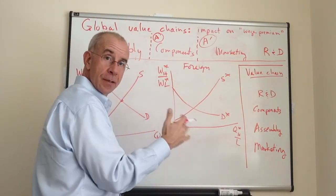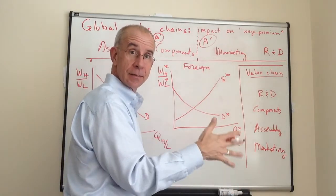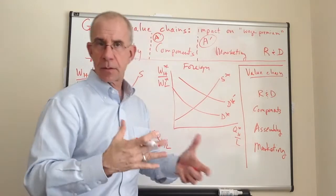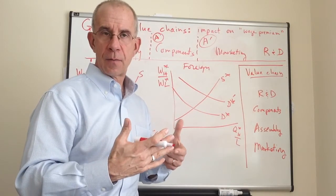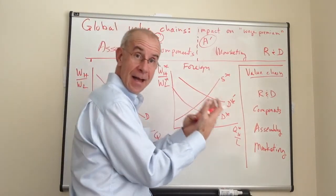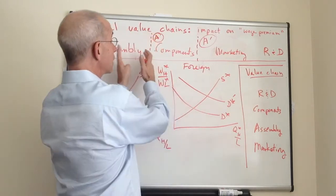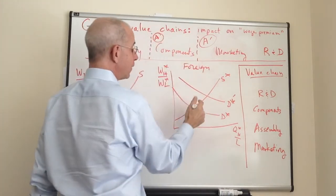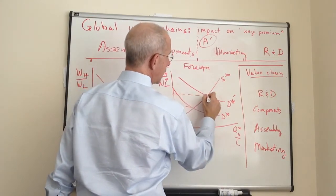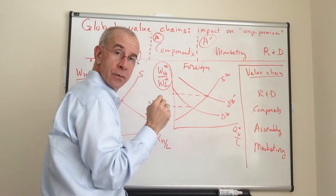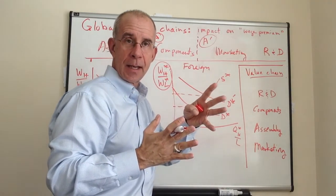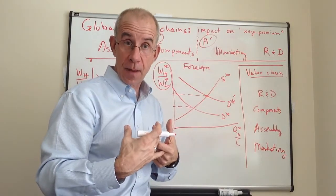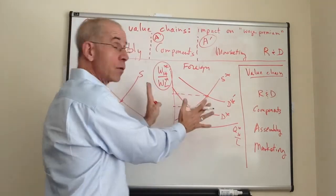Let's start with the foreign country. This change in demand for what is, for them, a relatively high-skilled task is going to increase their relative demand curve. We're talking about relative demand: high-skilled labor demand increases because more components are being produced in this country. So what you have is an increase in the relative wage — an increase in the wage premium in the foreign country, the developing country — because there is higher demand for what is, for them, a high-skilled activity.